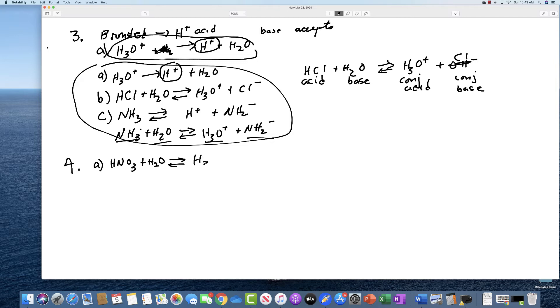So this would be H3O plus, plus NO3 minus. Again, this is the acid, this is the base, this is the conjugate acid, this is the conjugate base. B is PH4 plus, and if you add that to water, you get H3O plus, plus PH3.